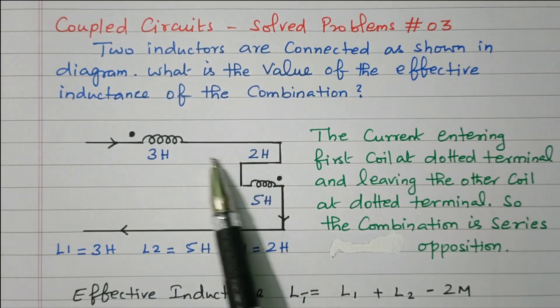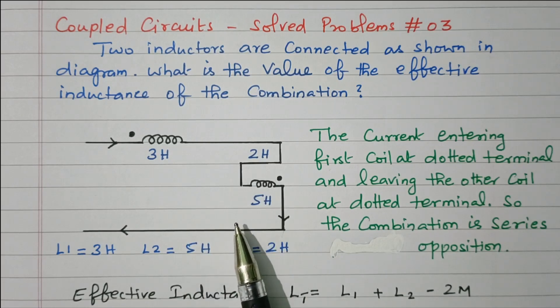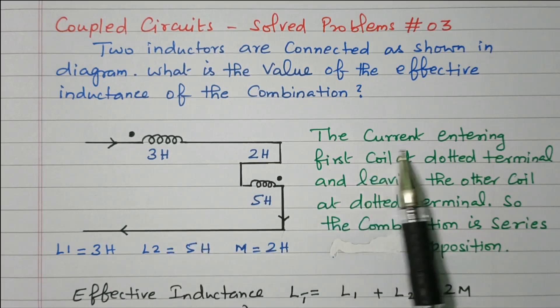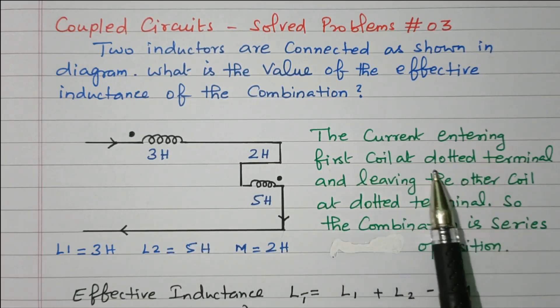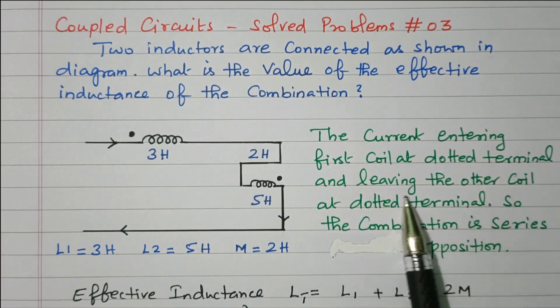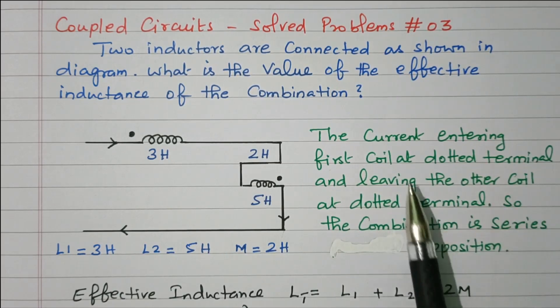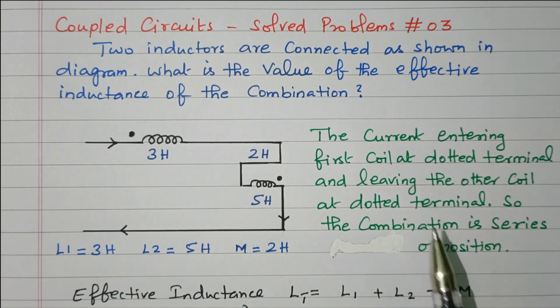This is the mutual inductance between coil 1 and coil 2. Because the current enters the first coil at the dotted terminal and leaves the other coil at the dotted terminal, it is series opposition.